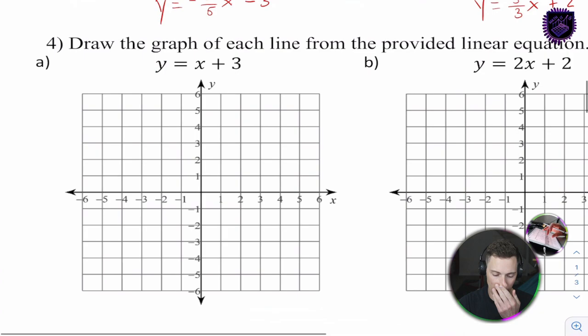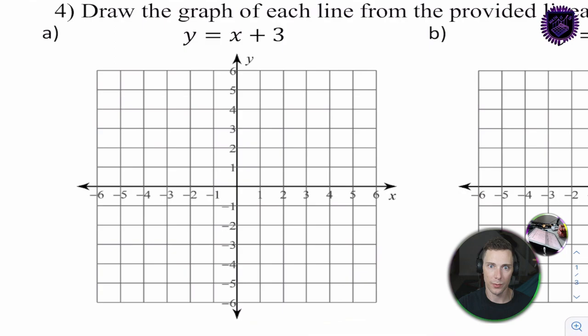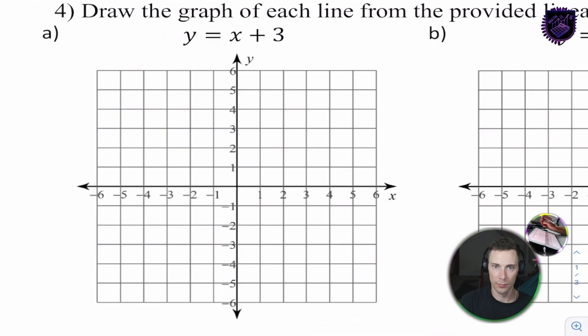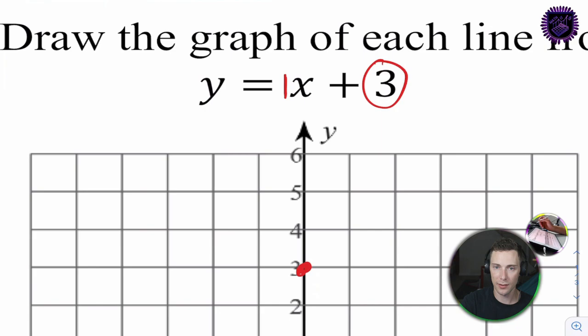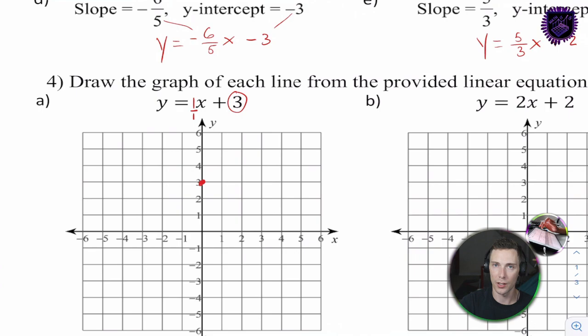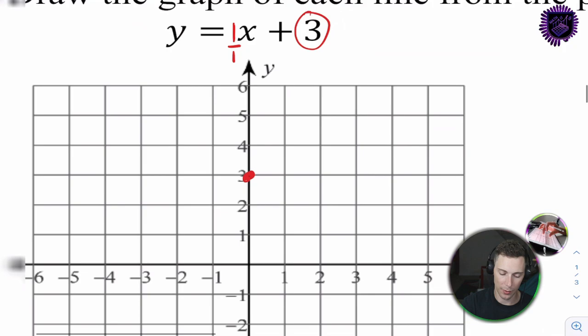Question 4a — we're now graphing these lines: taking the equation and putting it onto the graph. First, look at the y-intercept, which is 3 — graph that as the first point. The slope is just x, which means a slope of 1, and we can write that as 1 over 1. So the rise and run are both 1.